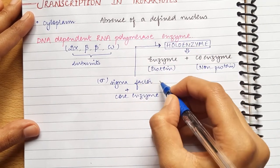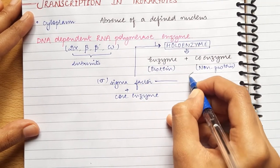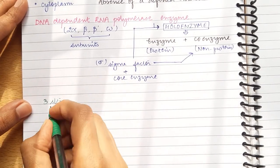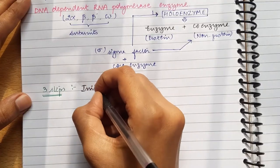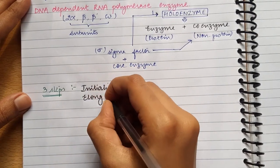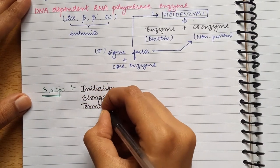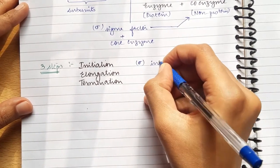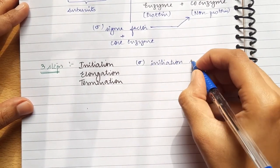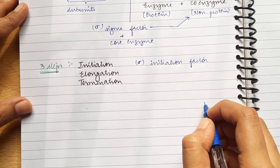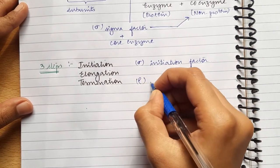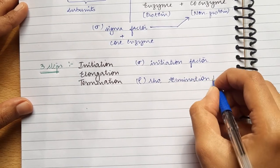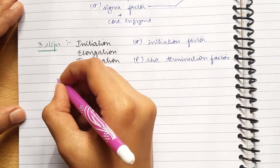Transcription has three main steps: first is initiation, then elongation, and then last termination. How do we get signals for when transcription should start or stop? For this there are two factors. First is the sigma factor which is the initiation factor, and then there is rho factor which is the termination factor.